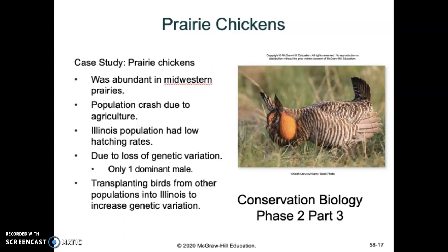We're going to get started with the third part of conservation biology phase two. Last lecture we left off talking about prairie chickens and jaguars, and how as populations get smaller and smaller, you lose genetic diversity. And that's a really, really bad thing.